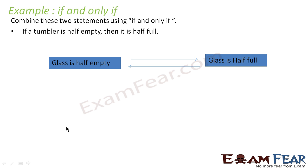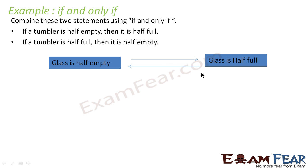We will take one more example. We have to again combine these two statements. If a tumbler is half empty, then it is half full. And also if the tumbler is half full, then it is half empty. Here also it is bidirectional and both are necessary and sufficient conditions. If I know that the tumbler is half empty, we can sure-shot say that the tumbler is half full. Similarly, if I know that the tumbler is half full, I can sure-shot say that the tumbler is half empty.